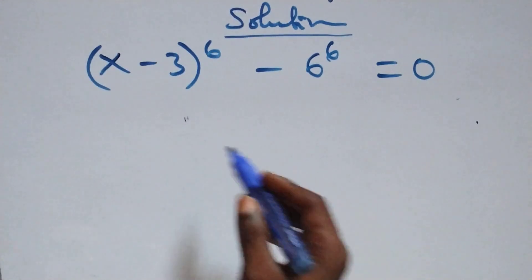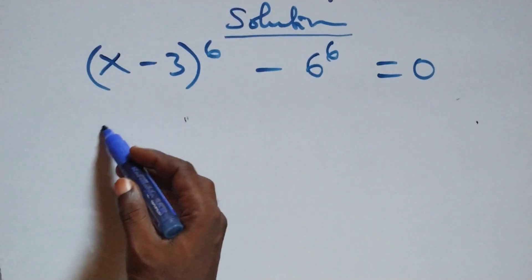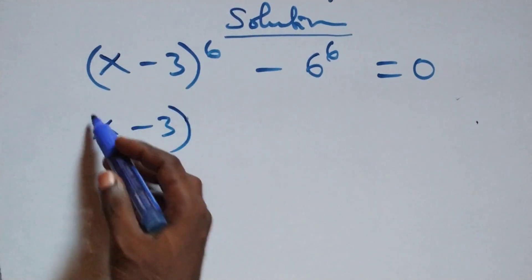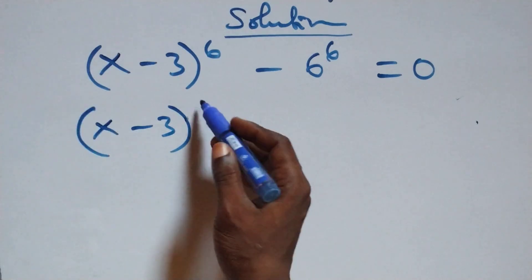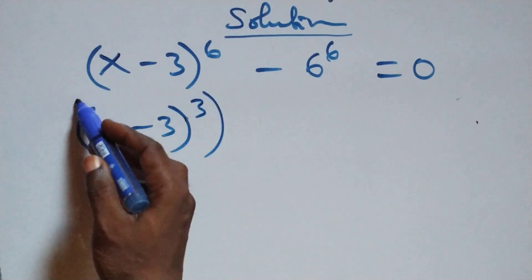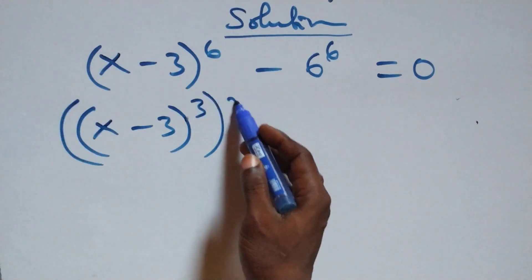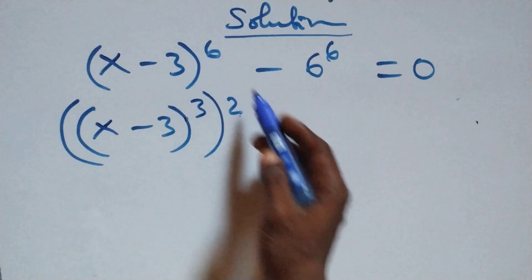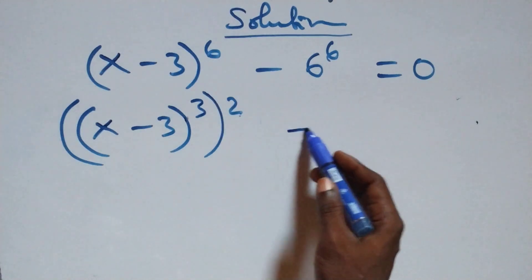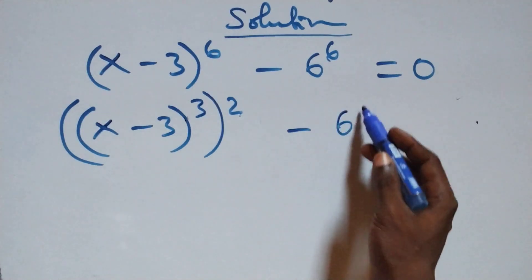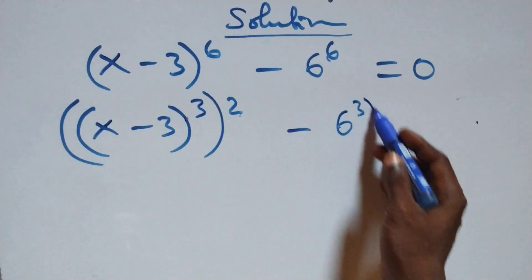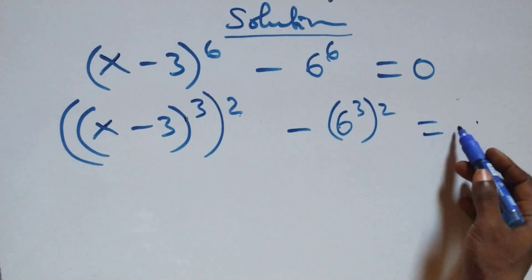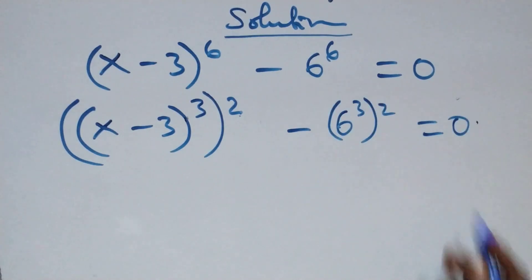The next step: we can write this as (x minus 3) raised to the power 3, then raised to the power 2 — since 2 times 3 gives us 6 — then minus, same thing here, we have 6 raised to power 3, then raised to the power 2, which equals 0.